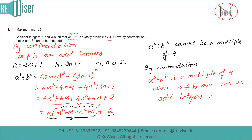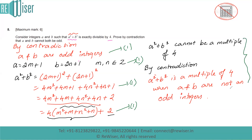This is the complete answer for this question. It is a 6-marker: one mark for assuming a and b are both odd integers, one mark for writing down the odd integer forms, one mark for substituting and expanding, one mark for showing the key step, and two marks for the concluding contradiction statements.